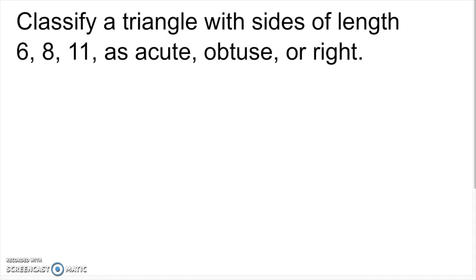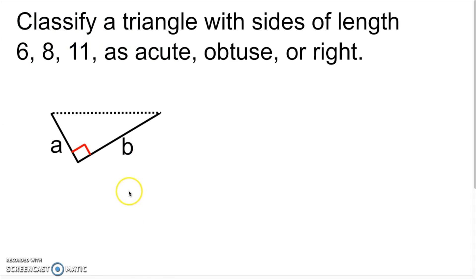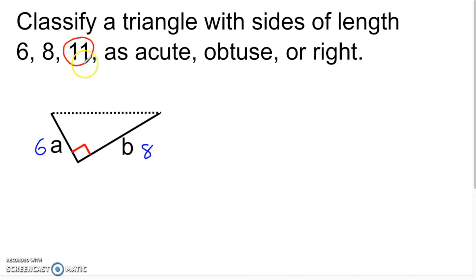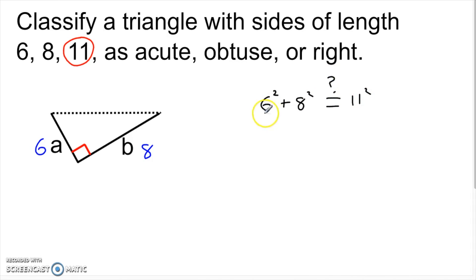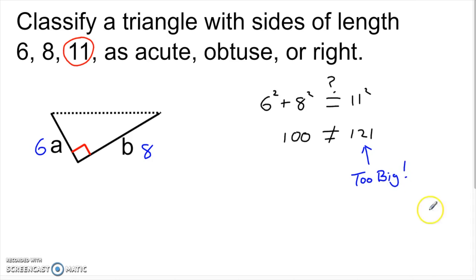Let's look at another example: classify a triangle with sides 6, 8, and 11. Same approach — if it were a right triangle, A could be 6 and B could be 8. The 11 is the largest side, so it becomes my C. I check: 6 squared plus 8 squared — does that equal 11 squared? That's 100 on the left. And 11 squared is definitely bigger than 100, since 10 squared is already 100. So this is not equal — my C is too big. There's more hypotenuse than I need.